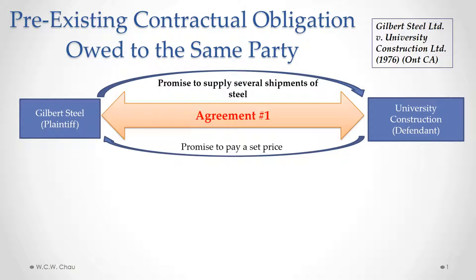So Gilbert Steel had promised to supply several shipments of steel at that set price. Now, after a few shipments had been made, the world price of steel had gone up. So Gilbert Steel went back to University Construction and told them about the increase in the price of steel to see if University Construction would be willing to pay a higher price for the remaining shipments of steel.